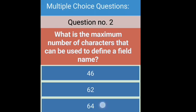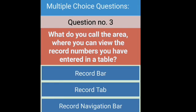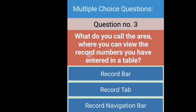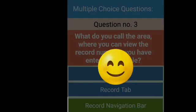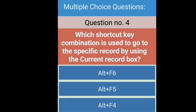Question number three: What do you call the area where you can view the record numbers you have entered in a table? Which area shows us how many records we have entered in the table? The area in which we can view the record numbers is called Record Navigation Bar. So the right answer is Record Navigation Bar.